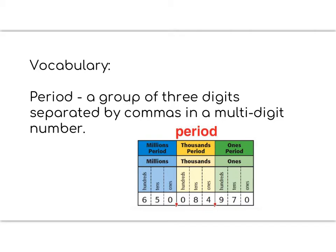Today's lesson has a vocabulary word. The vocabulary word for today is period. A period is a group of three digits that are separated by a comma in a multi-digit number. In the example down below, we're looking at the number 650,084,970. And we know how to say that number because we look at each group of three and then we see a comma. That group of three is called a period. So we have the ones period, the thousands period, and the millions period. Every time we see a comma, that starts a new period. Please pause to write the vocabulary word and the definition in your notebook.